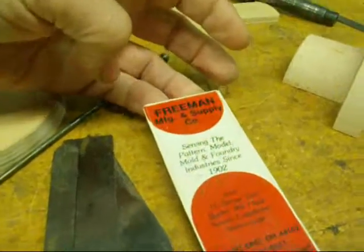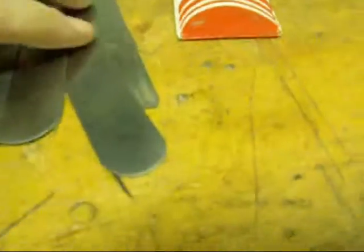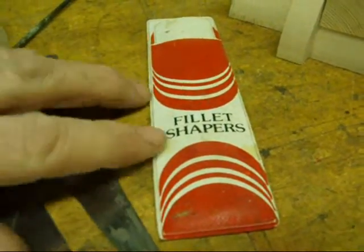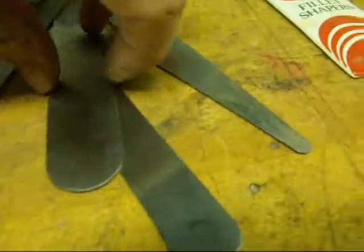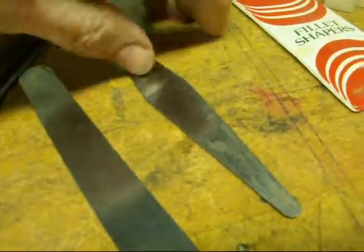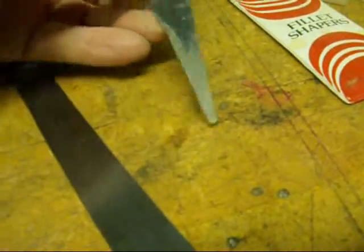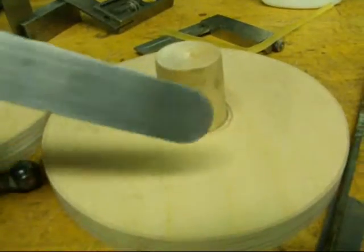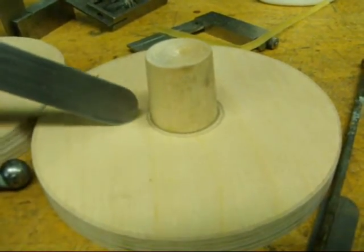I believe it's the Freeman Company. This is a set of fillet shapers, and they're nothing more than pieces of spring steel with various radiuses on the end, from large to small. And all you do is put your body putty on, and you would scrape that around.